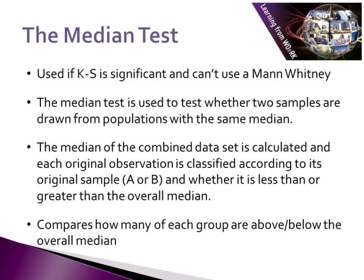If the KS test is significant, meaning we can't use Mann-Whitney, we use a median test. A median test is used to test whether two samples are drawn from populations with the same median. The median of the combined data is calculated, and each original observation is classified according to its original sample (A or B) and whether it is less than or greater than the overall median. It then compares how many of each group are above or below the overall median.